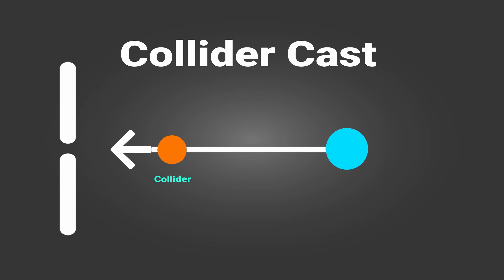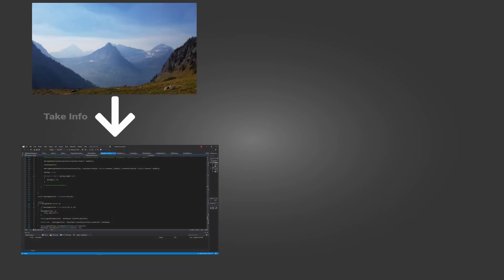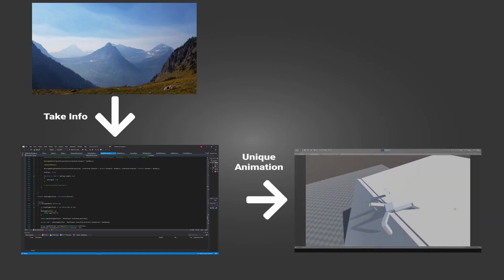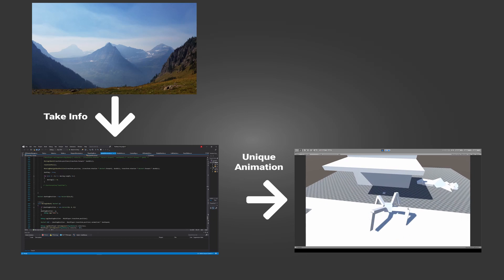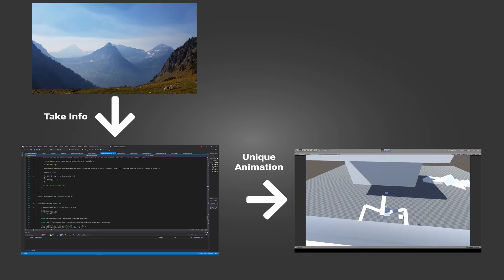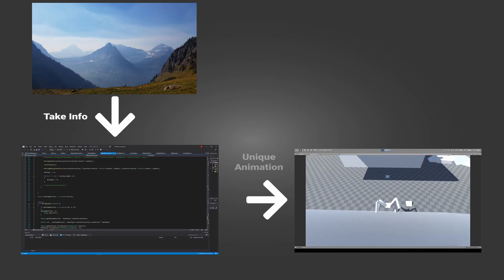After getting this information about the environment around the player, you can take that data — like where to move the leg down, whether it's on the ground or a wall — and play exactly the best animation for that situation. This helps us make the animation code react however we want for any scenario, because we design the code to gather information from the game world environment and then produce a specific animation for that situation, like a wall run or a specific boss attack.